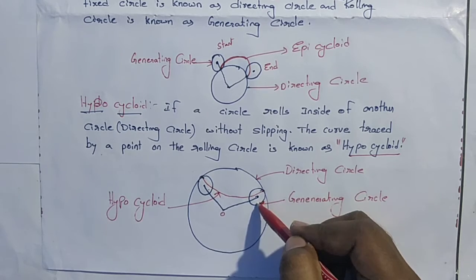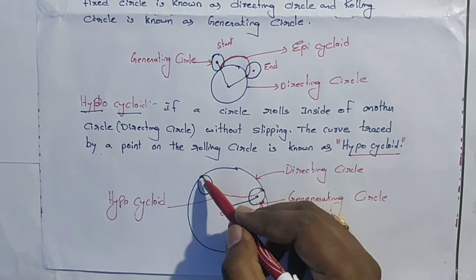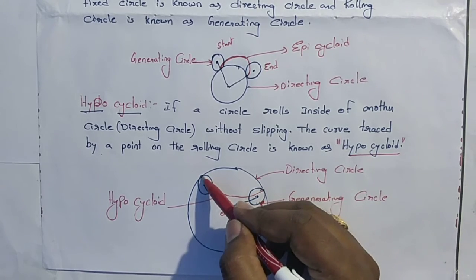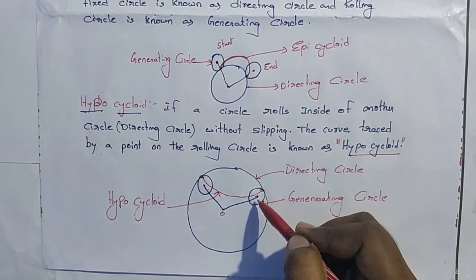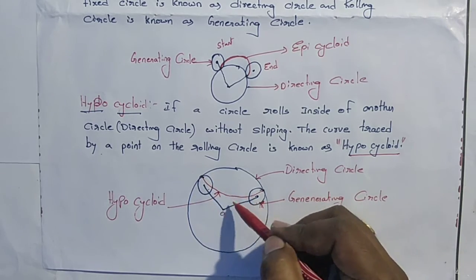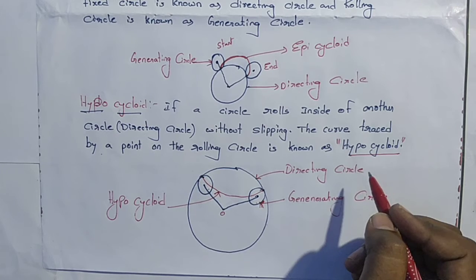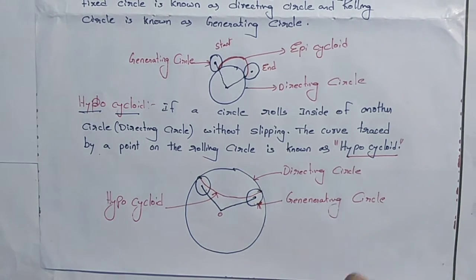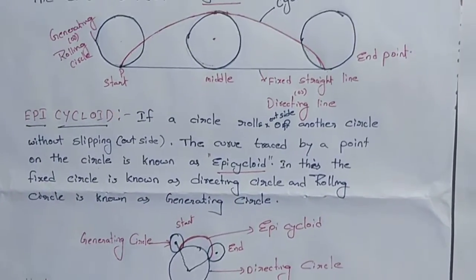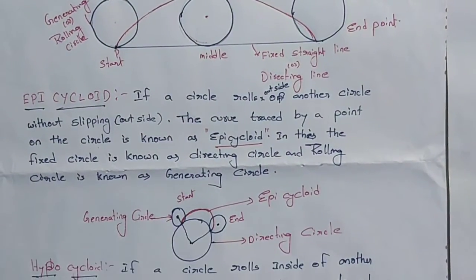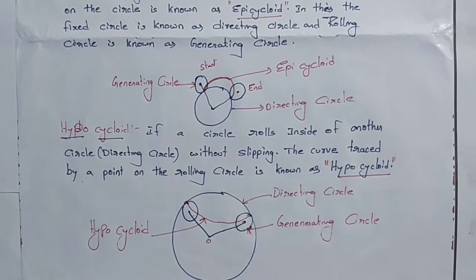The rolling circle rotates inside the directing circle. I have taken the point at the intersection of the generating circle and the directing circle as a reference. Due to one full revolution, the point traces one path — that path is known as a hypocycloid. So to summarize: this is the cycloid, this is the epicycloid, and this is the hypocycloid.